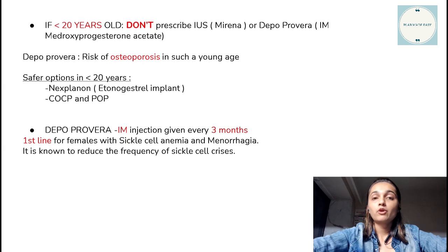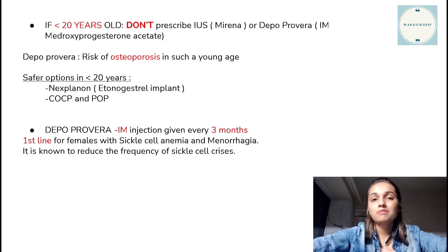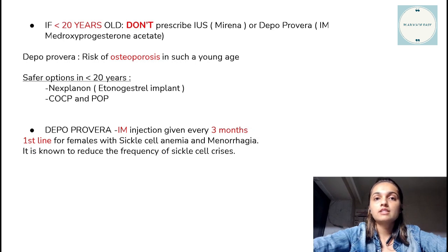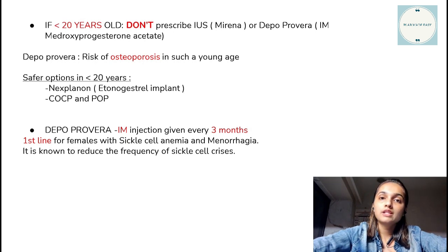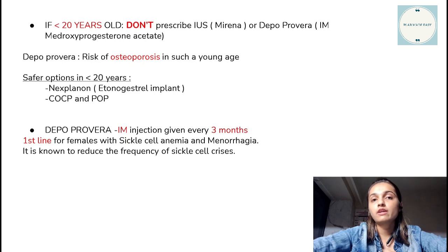When it comes to prescribing contraceptives in females who are less than 20 years old, we shouldn't prescribe Mirena or Depo-Provera. Mirena is an intrauterine system and most of these females are nulliparous. Depo-Provera, which is an intramuscular injection of medroxyprogesterone acetate, increases the risk of osteoporosis if given at such a young age. Depo-Provera is the contraceptive of choice in females suffering from menorrhagia and also the first-line contraceptive in those suffering from sickle cell disease, as it decreases the frequency of sickle crisis.